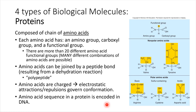Proteins have a huge number of roles to play in our bodies, and there are lots of different types of proteins. All proteins are built from amino acids, which have a general structure. They always have a side group — a functional group — and that functional group can exist in many different forms.